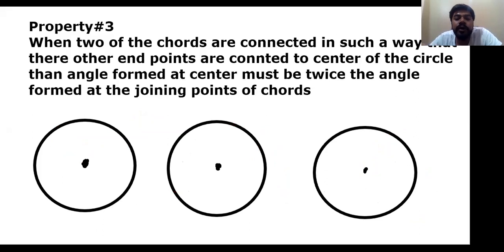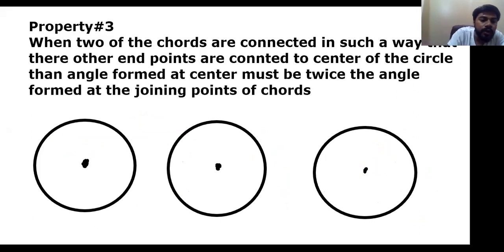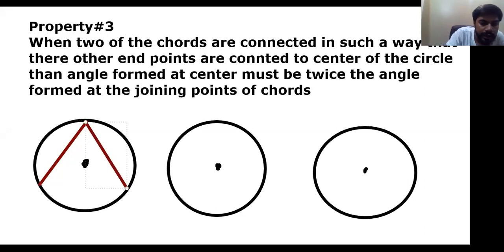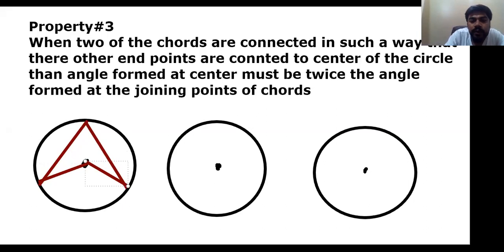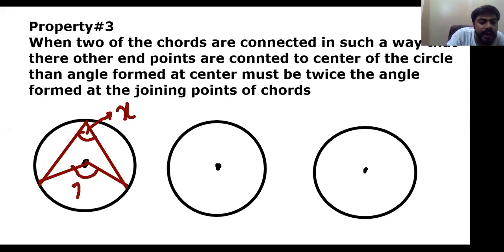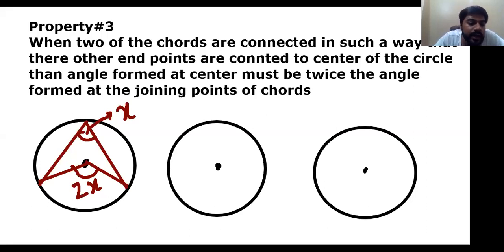Let's move to property number three, which appears in most exam questions. According to this property, when two chords are connected in such a way that their other endpoints are connected to the center of the circle, the angle formed at the center must be twice the angle formed at the joining point of the chords. If you consider the angle at the joining point as x, then the angle at the center would be 2x.